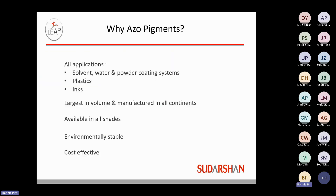So why do we use azo pigments? They are used in all applications — in solvent, water, and powder coating systems. They are very useful for plastics and inks, as well as other special application areas. Primarily, they are the largest in volume and are manufactured on all continents of the globe. They provide a lot of shades for the color formulator, are environmentally stable, and to a great extent are very cost-effective.